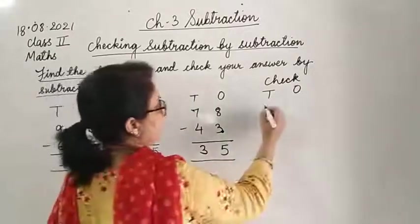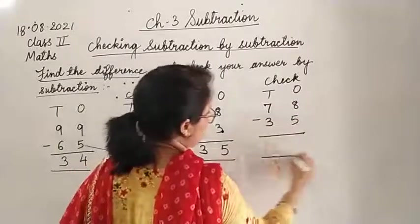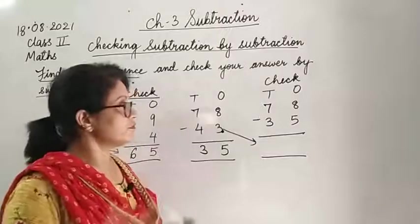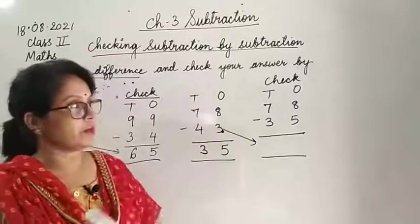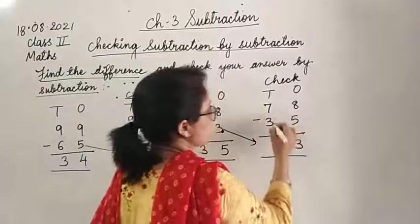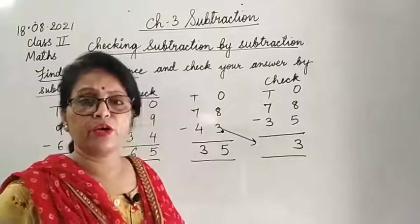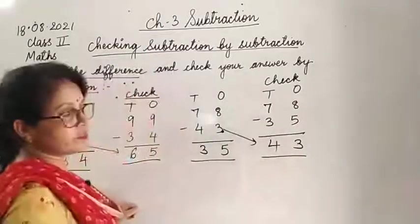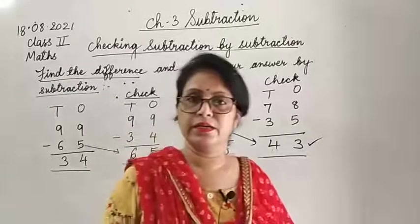78 stays on top. Subtract 35 from it: 8 minus 5, take away 5, count from 5 onwards - 6, 7, 8 - answer is 3. Then 7 minus 3: take away 3, count from 3 onwards - 4, 5, 6, 7 - answer is 4. We got 43, same answer. Our subtraction is correct.